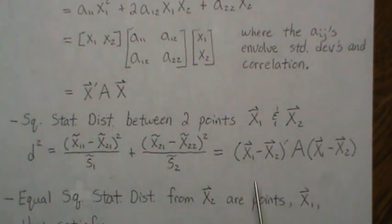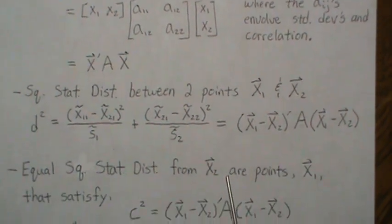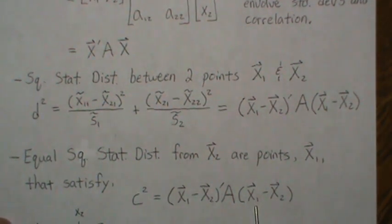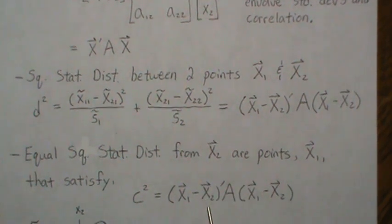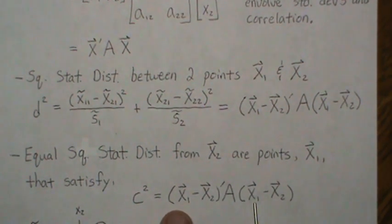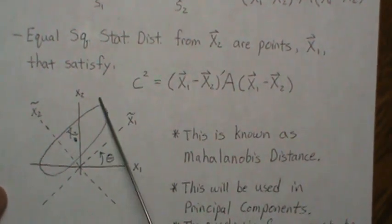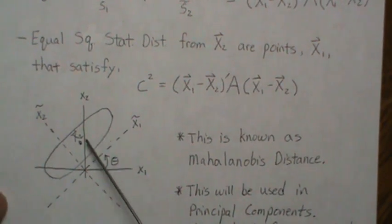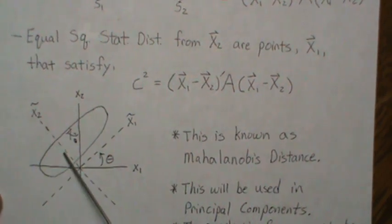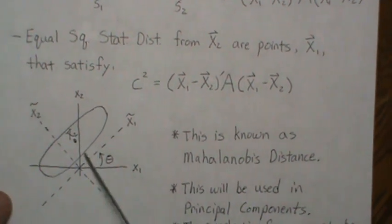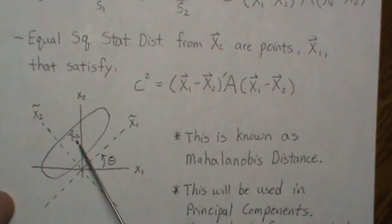If we wanted to find, if we wanted to fix a point, say X2, and we wanted to find equal statistical distances from this point, then these are all the points, say X1, that satisfy this relationship. So X2 is fixed, and then we change this point up until it equals C squared. And then what that does is we end up getting another, an ellipse, around X2. And the major and minor axes are parallel with these rotated axes, or perpendicular, depending upon which way you're looking. And so this is that equal distance from this point here.